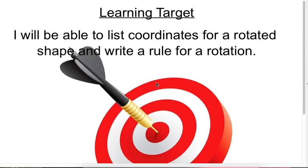Your learning target for this lesson is that you will be able to list the coordinates for a rotated shape, and let's not forget what coordinates are. Coordinates are the ordered pairs, and you'll be able to write a rule for a rotation that's already been made.